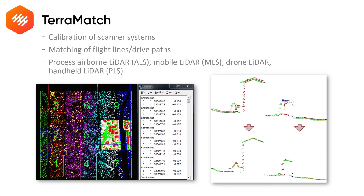Teramatch can be used for different purposes. One is to calibrate your scanner system. Another one is to do strip adjustment of multiple flight lines or drive paths. In Teramatch you can process different types of LiDAR data.